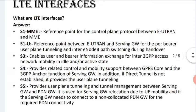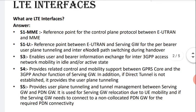Next, the S1-U interface. This is the reference point between eNodeB and the Serving Gateway (SGW) for per-bearer user plane tunneling and inter-node path switching during handover. This interface is used during handover and connects eNodeB to the Serving Gateway SGW.